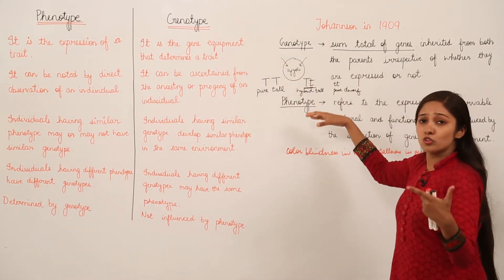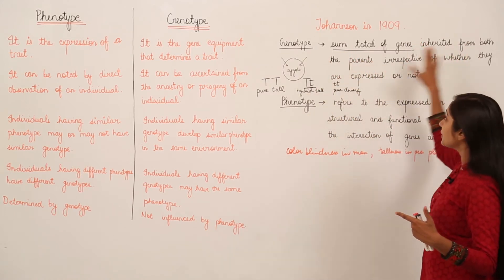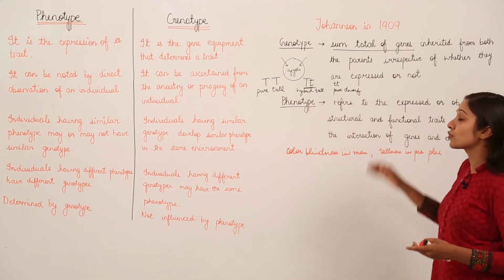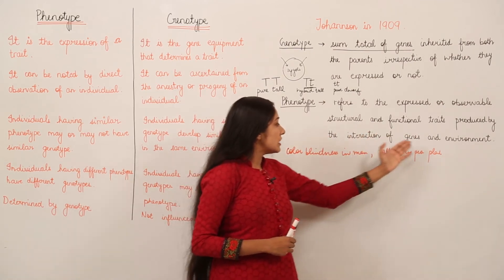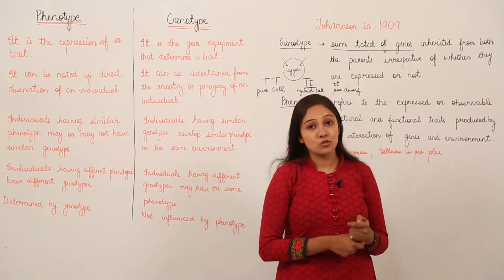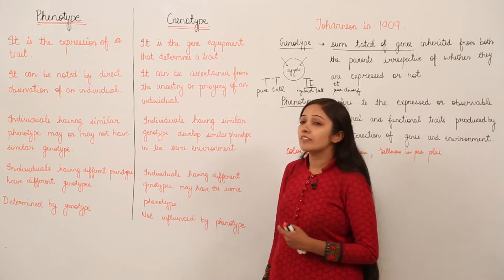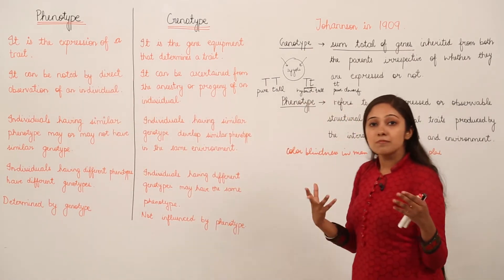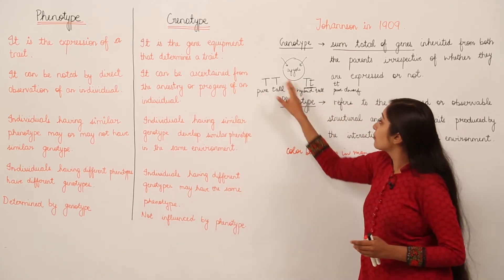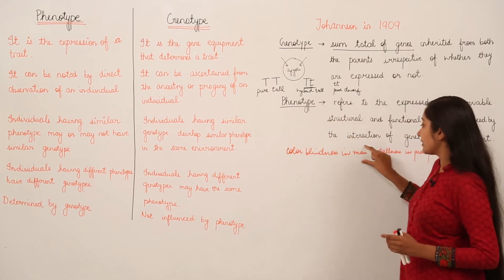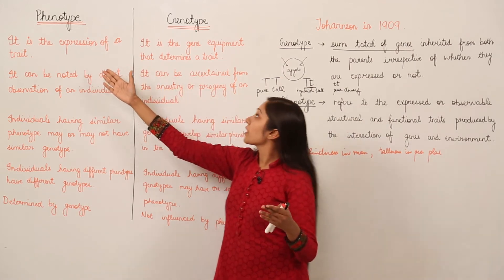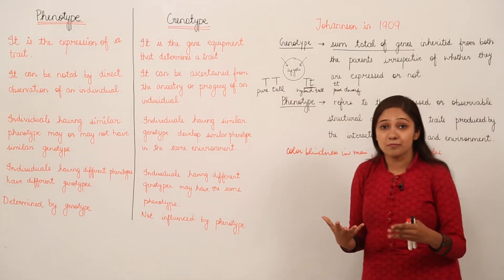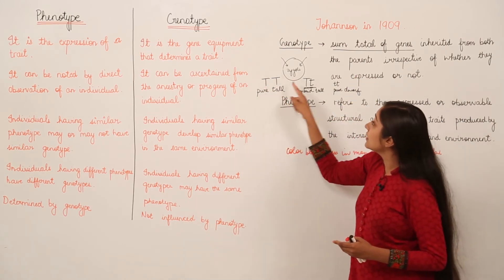To revise: genotype is the sum total of genes inherited from both parents, irrespective of whether they are expressed or not. Phenotype refers to the expressed or observable structural and functional traits produced by the interaction of genes and environment. Now, in examinations when you are asked to differentiate, here are points to discuss. For phenotype, it is the expression of a trait — for example, tallness or colour blindness. For genotype, it is the gene equipment that determines a trait, such as TT, Tt, or tt.